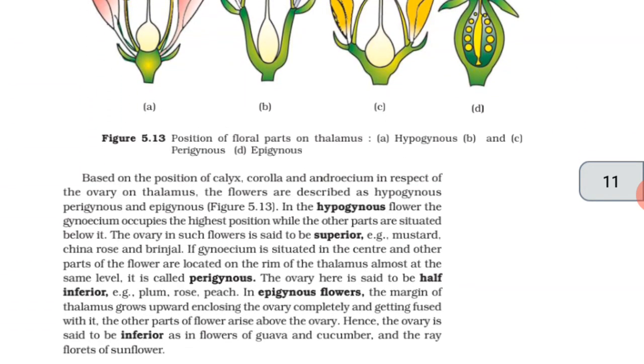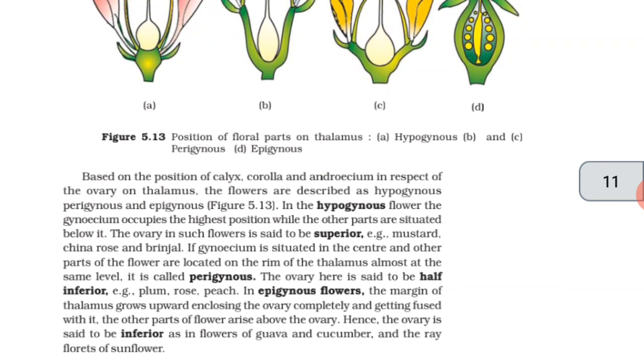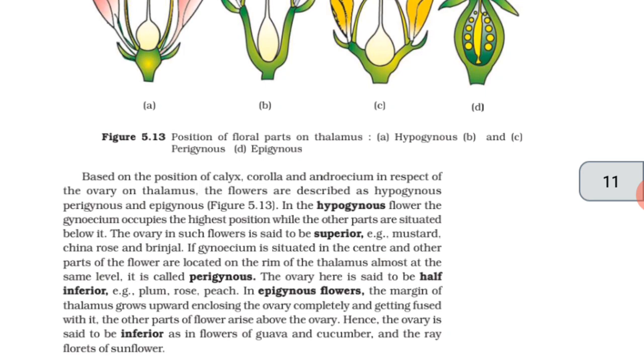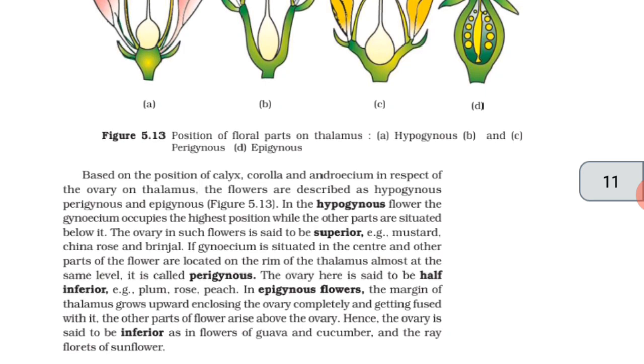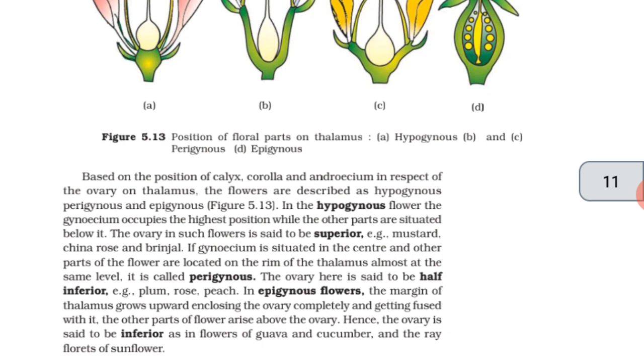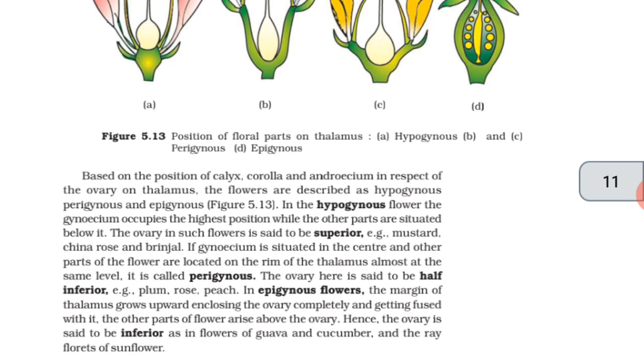Based on the position of calyx, corolla and androecium in respect of the ovary on thalamus, the flowers are described as hypogynous, perigynous, and epigynous. In the hypogynous flower, the gynoecium occupies the highest position while the other parts are situated below it. The ovary in such flowers is said to be superior, e.g. mustard, china rose, and brinjal.